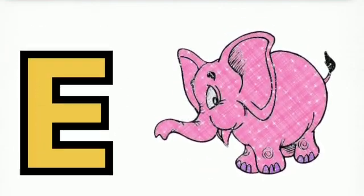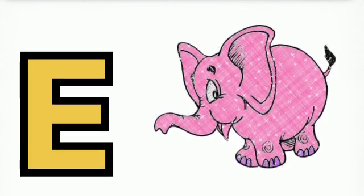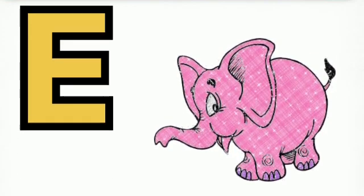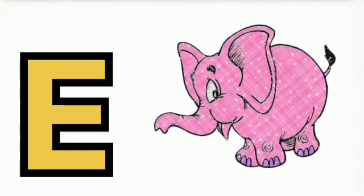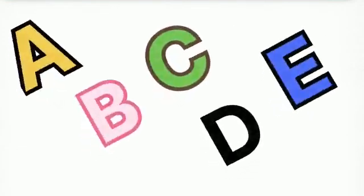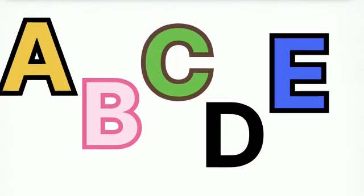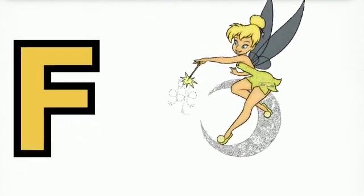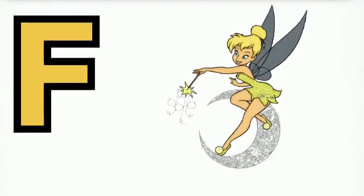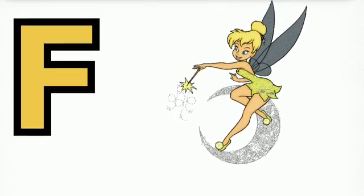E is for Elephant. E-Elephant, E-Elephant, E, Elephant. F is for Fairy. F-Fairy, F-Fairy.